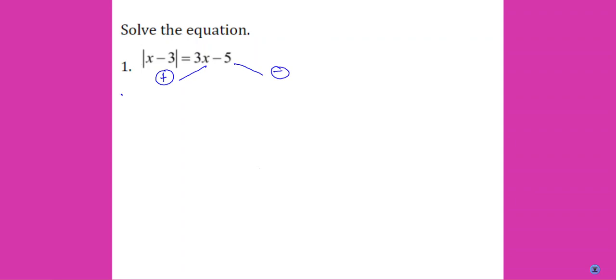So our two equations are: x minus 3 equals 3x minus 5, and negative x minus 3 equals 3x minus 5.